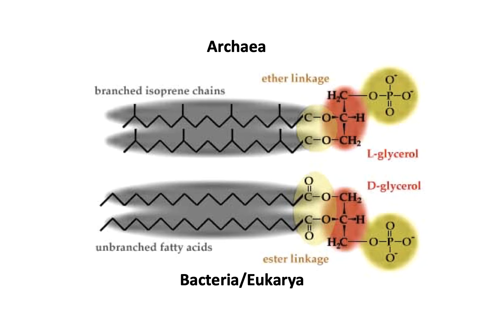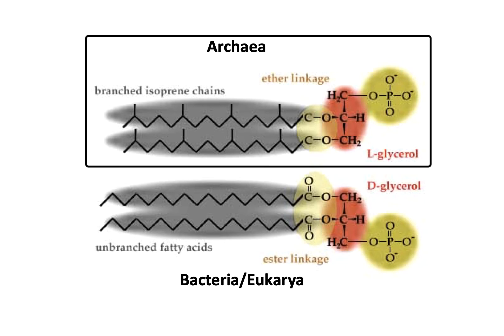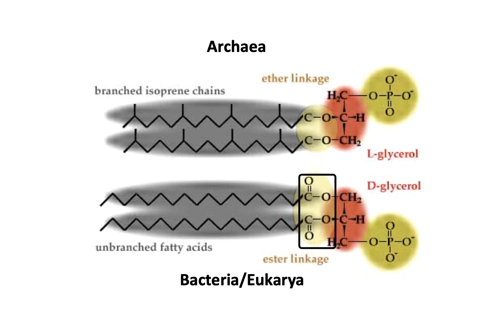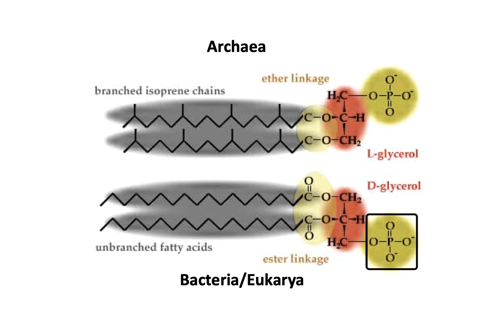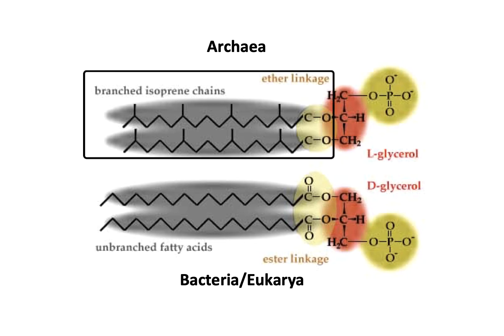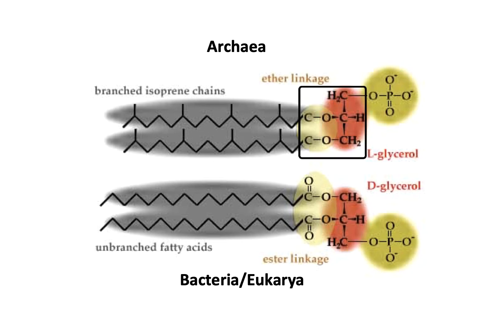The structure and makeup of archaeal cell membranes is quite different from that of bacteria and eukaryotes. In bacteria and eukaryotes, you have unbranched fatty acids, often with a double bond causing a kink, with an ester linkage to a glycerol molecule, then the phosphate and usually another molecule attached to it. Archaea usually have branched isoprene chains — a little more stable — with attachment to L-glycerol by ether linkages rather than ester linkages, then the phosphate group and a head molecule on top.